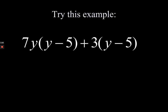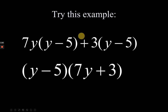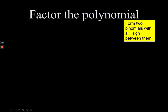Another example: we take out (y - 5) as the common factor between the two terms. Write it in one parenthesis in front, and the non-common parts — 7y and 3 — are written together as (7y + 3) in another parenthesis. The sign depends on the sign in front of each term.